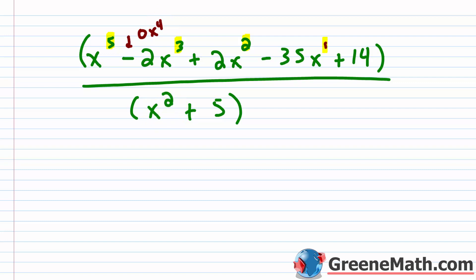Down here in the divisor, it's the same thing — I'm missing a power. I have x squared but no x to the first power, so I'm going to be inserting a 0x.